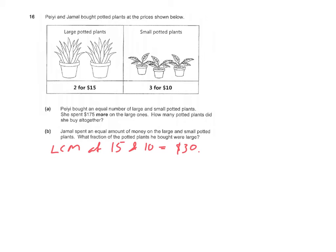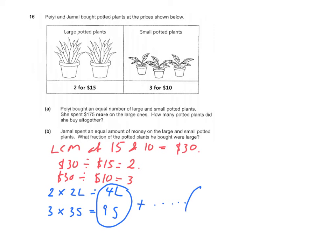30 divided by 15 equals 2, and 30 divided by 10 equals 3. That means in order for him to spend the same amount of money on the large and small potted plants, for every 2 sets of large potted plants that he buys, he must have bought 3 sets of small potted plants, which is every 4 large potted plants, he has to buy 9 small potted plants.